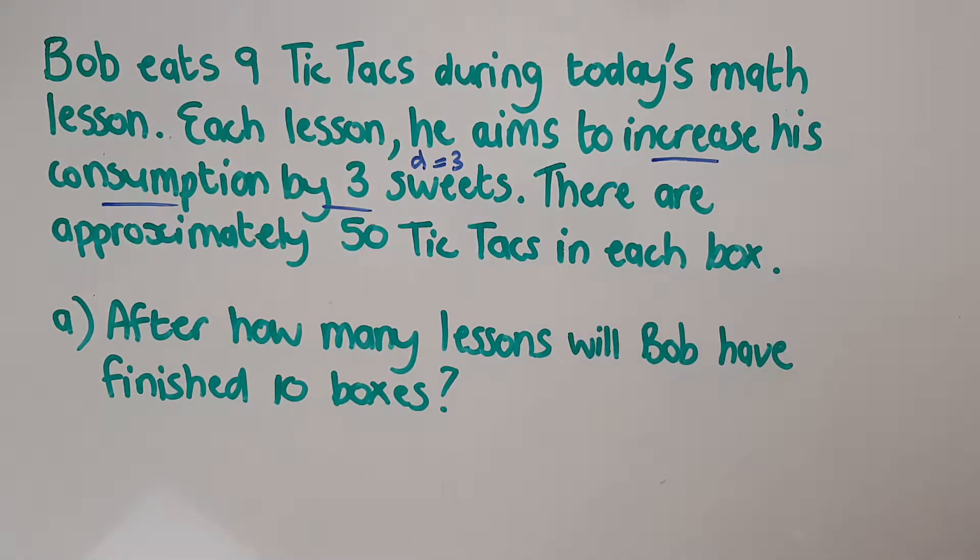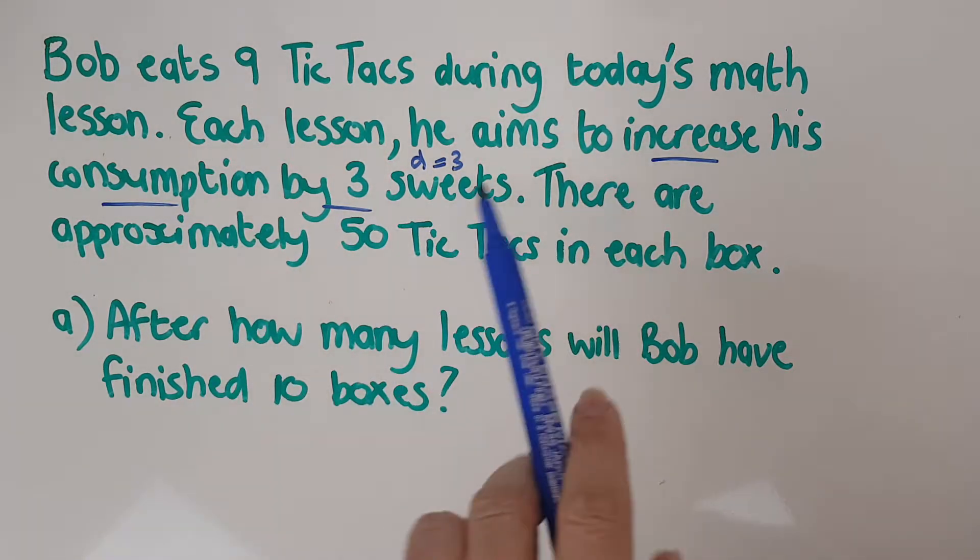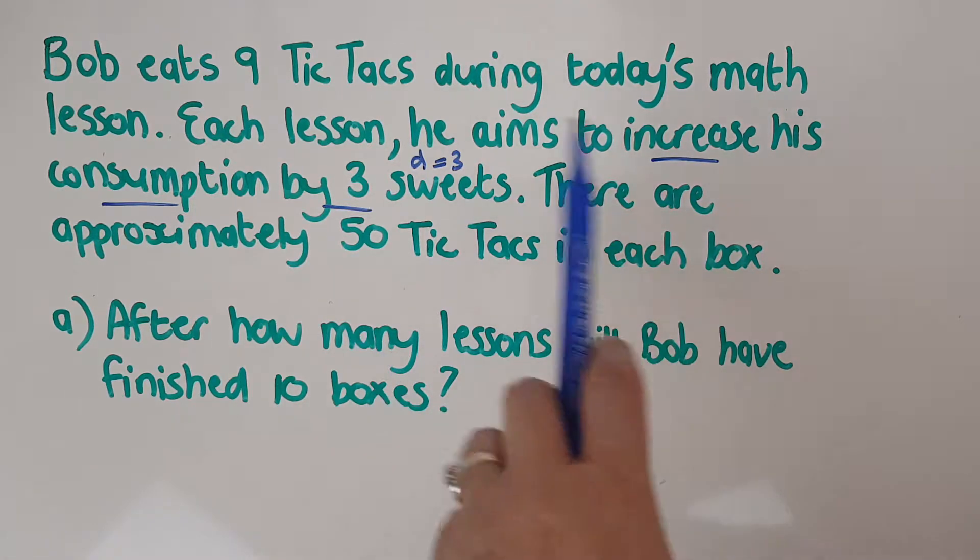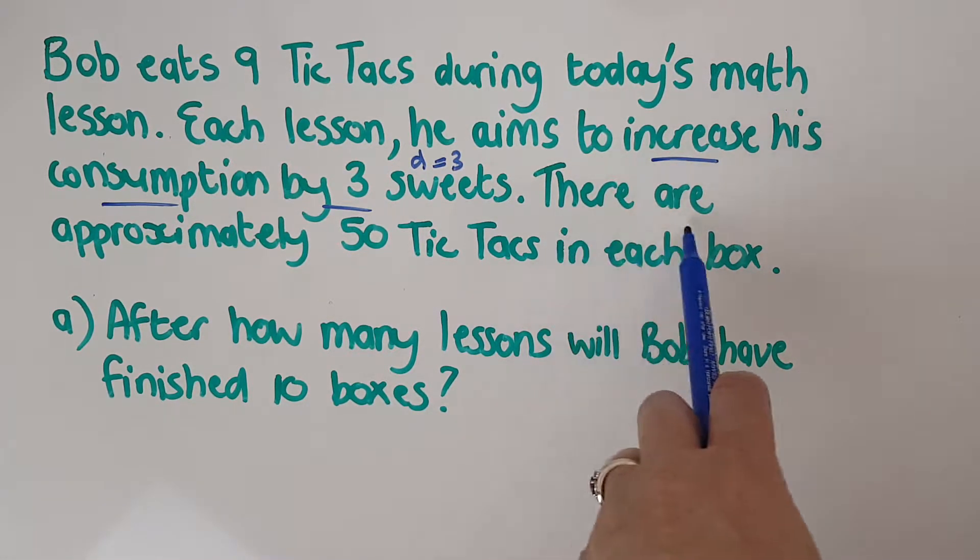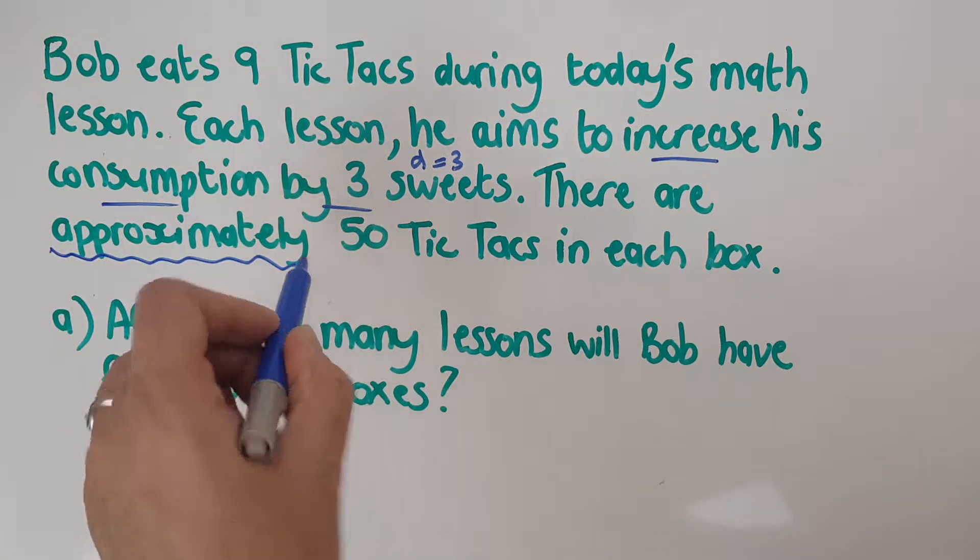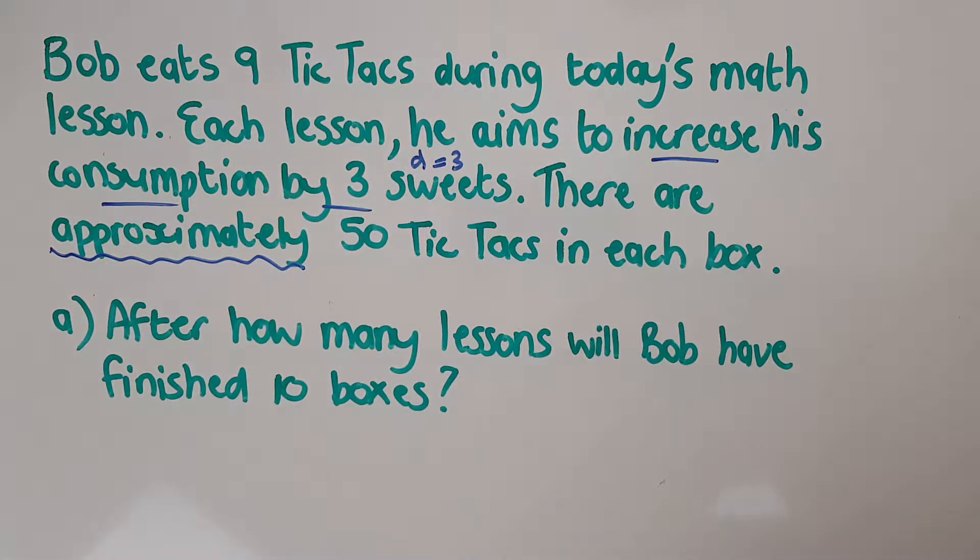There are approximately 50 tic tacs in each box. Is that n? Is that Tn? This is different. This is an example where I put the question down because you're going to need the question to understand what you're doing because this is a very strange piece of information. The word approximately is also interesting because we don't do approximately in math, but we are doing it today.